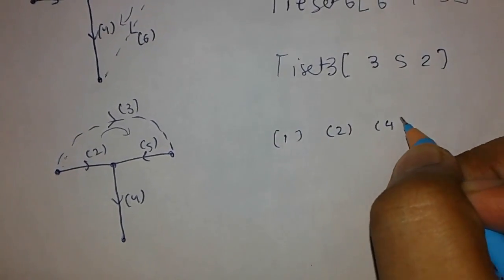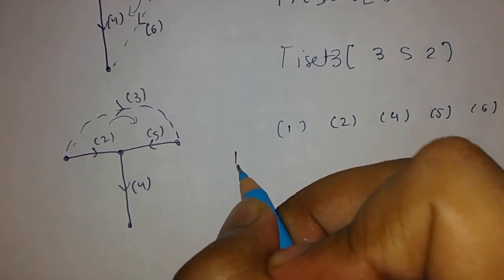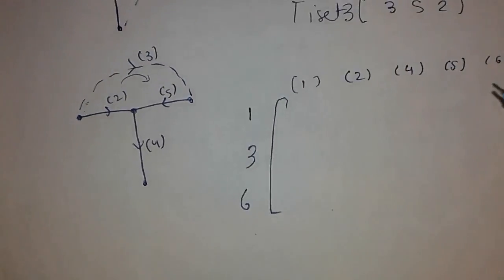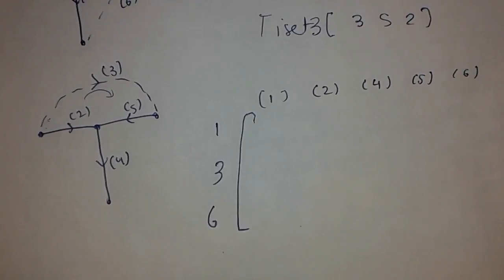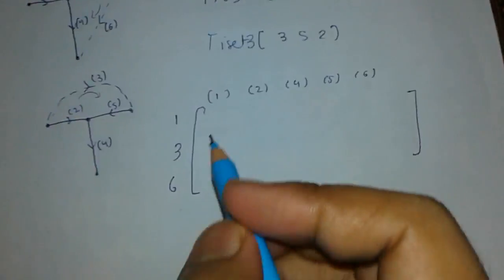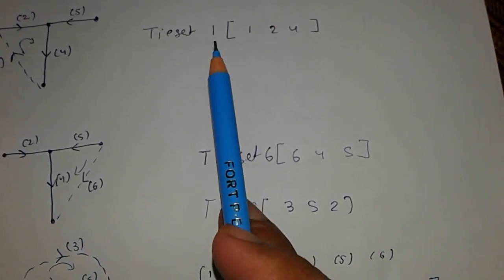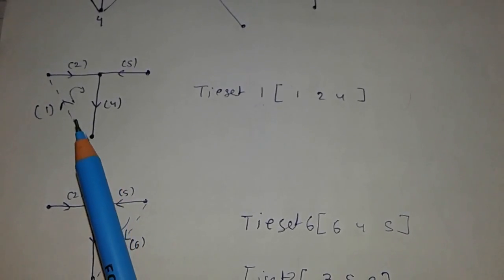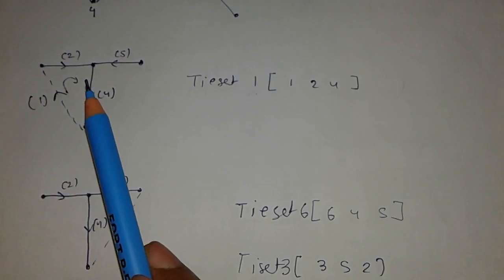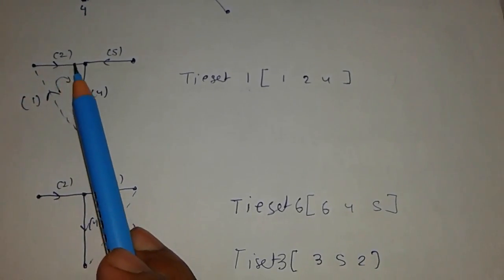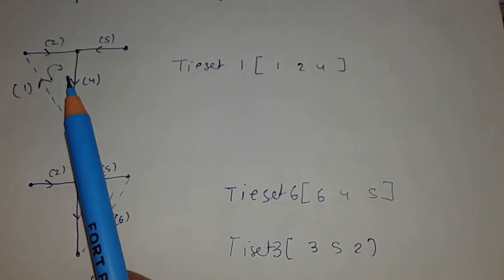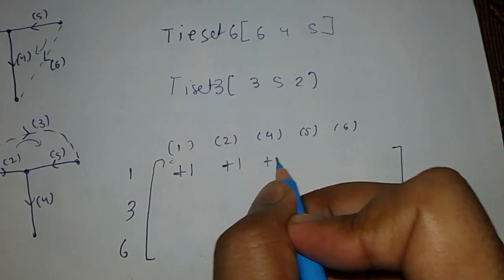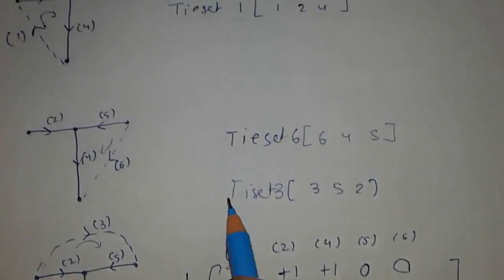We are going to construct our tie set matrix. The columns are edges one, two, three, four, five, six, and the rows are tie sets one, three, and six. For tie set one, the direction is one, two, four. Edge one is in the same direction so plus one, edge two is also in the same direction so plus one, edge four is also in the same direction so plus one, and the others are zero.